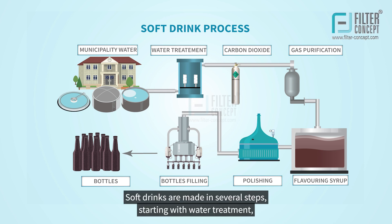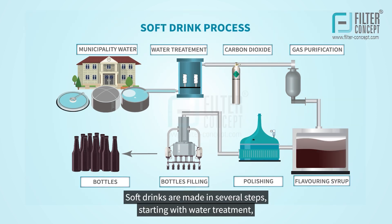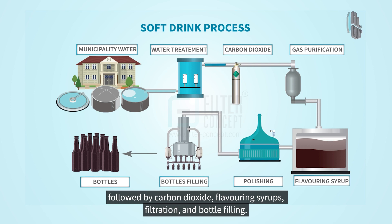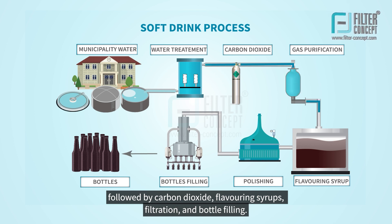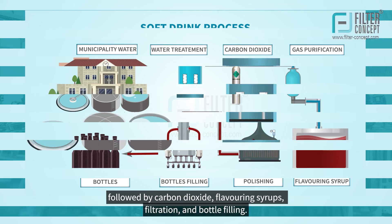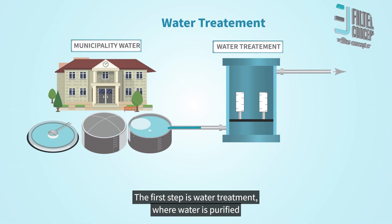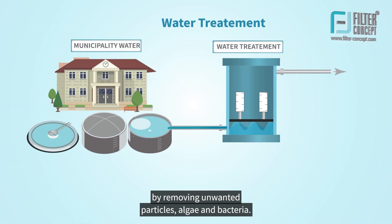Soft drinks are made in several steps, starting with water treatment, followed by carbon dioxide, flavoring syrups, filtration, and bottle filling. The first step is water treatment, where water is purified by removing unwanted particles, algae, and bacteria.